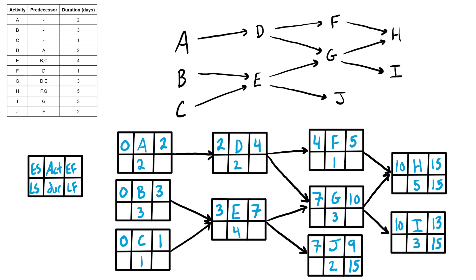Now we work backwards doing our backward pass, which is basically the opposite of the forward pass — we subtract the duration. Fifteen minus five gives a late start of ten for H. Fifteen minus three gives a late start of twelve for I. Fifteen minus two gives a late start of thirteen for J. We bring the late start into the late finish of the predecessor: the ten goes into F, and ten minus one is nine for F's late start. For G, there are two successors, so we bring the smaller of the two values — ten or twelve — we bring ten in and subtract the duration to get seven.